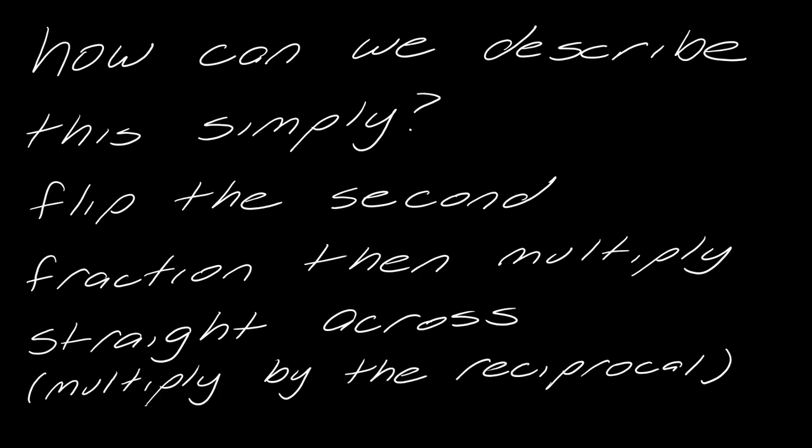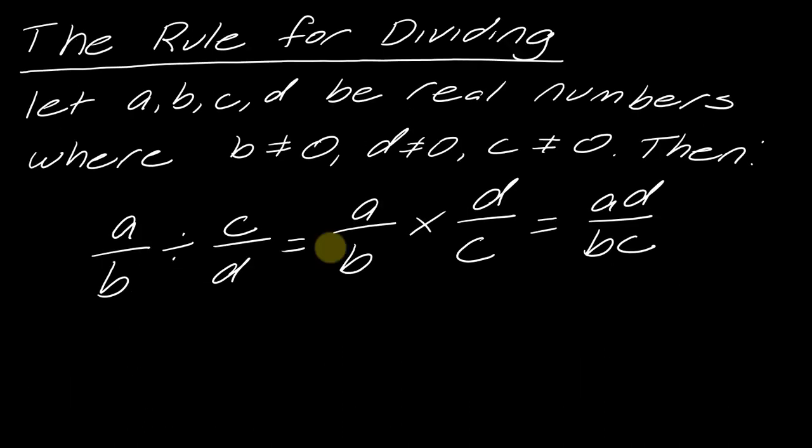We could say that you really flip the second fraction and then you multiply straight across. Or some people might say multiply by the reciprocal. So, I'm flipping this fraction here, as you can see, and then I just multiply straight across.